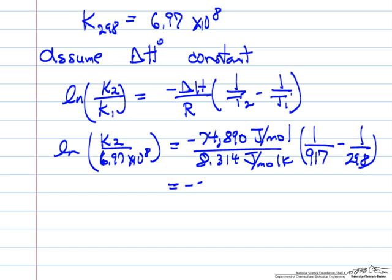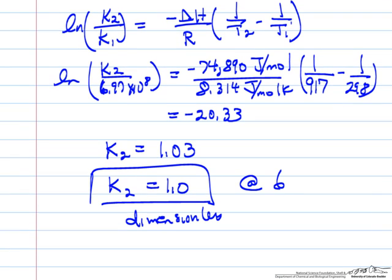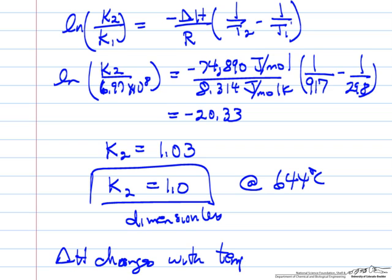The right side gives minus 20.33. Taking the exponential and calculating, K is approximately 1.03 — so K is approximately 1, dimensionless, at 644 degrees C. If we wanted a more accurate value, we would take into account that delta H changes with temperature and use heat capacities as a function of temperature to calculate Gibbs free energy at the new temperature, and therefore the equilibrium constant at the new temperature.